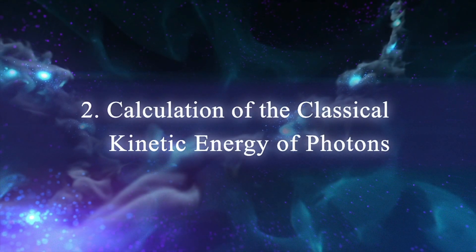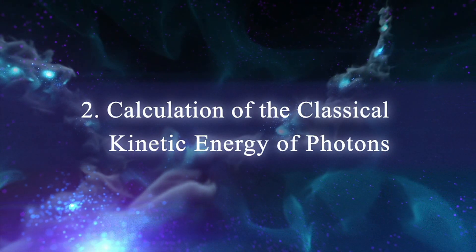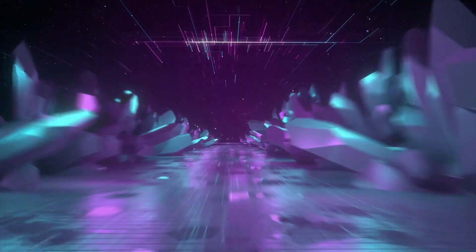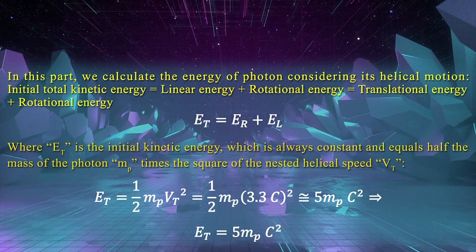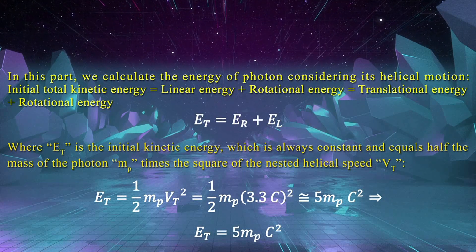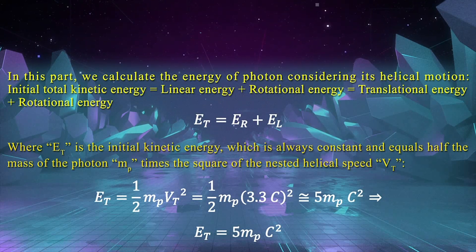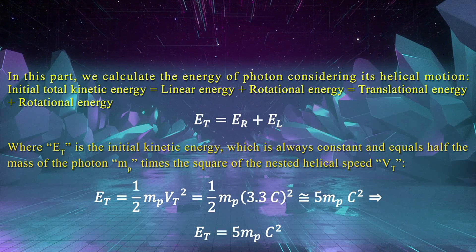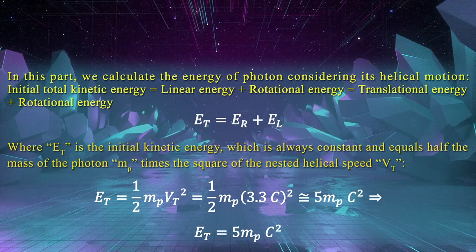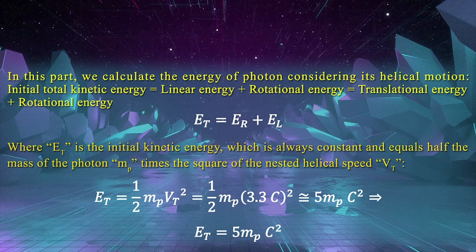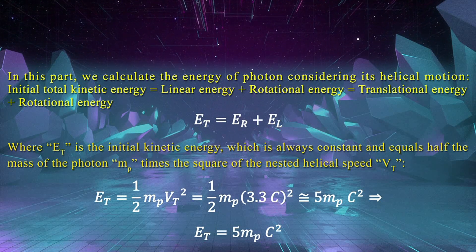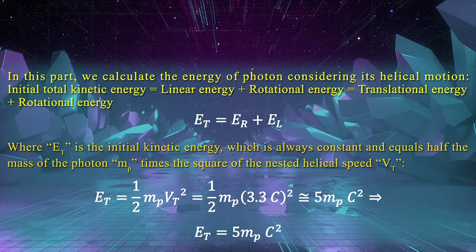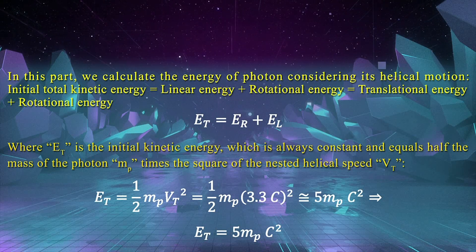Calculation of the classical kinetic energy of photons. We calculate the energy of the photon considering its helical motion. The initial total kinetic energy equals linear energy plus rotational energy, which equals translational energy plus rotational energy, where E is the initial kinetic energy — always constant — and equals half the mass of the photon m times the square of the nested helix speed v.